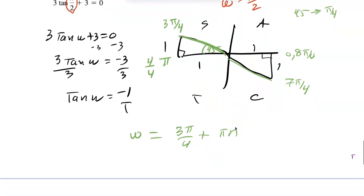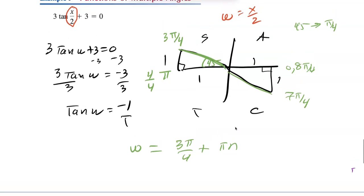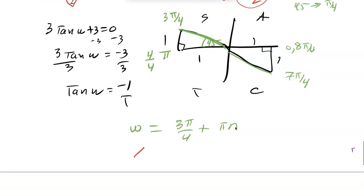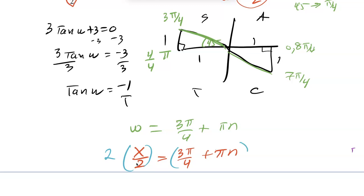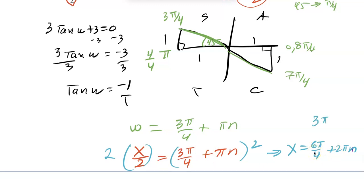But we weren't solving for w — we were solving for x/2. So x/2 = 3π/4 + πn. Multiply everything by 2 to get x = 6π/4 + 2πn, which simplifies to x = 3π/2 + 2πn. That's the solution.